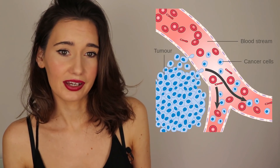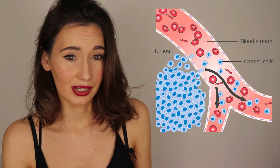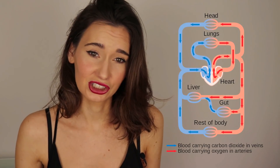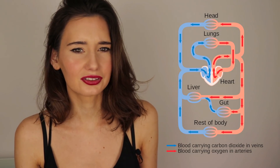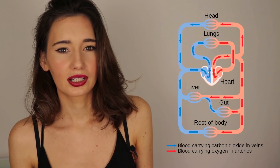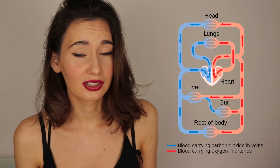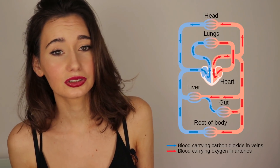Once cancer cells are in the bloodstream they are called circulating tumour cells. As you may already know, blood always circulates through the body in the same direction. This helps explain why some cancers spread to particular parts of the body — for example, colon cancer often spreads to the liver because the blood circulates through the bowel and onwards towards the liver.